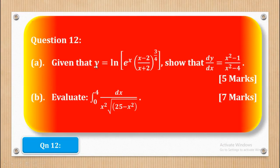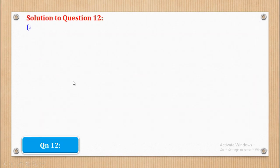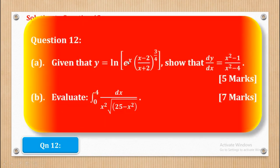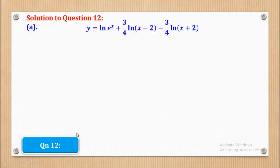I shall start with question 12. Question 12 says: given that y is equal to the natural log of the expression shown, prove that dy/dx is equal to (x squared minus 1) over (x squared minus 4). First of all we are going to split it, because expanding this will be from this and this is the product. So it will be ln of e to the power x, plus ln of (x minus 2) raised to the power 3/4, minus ln of (x plus 2) raised to the power 3/4.